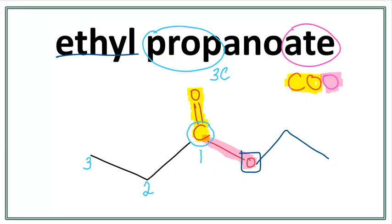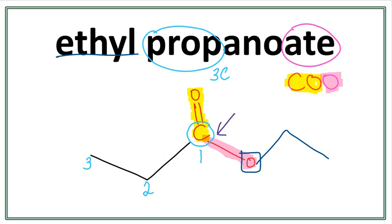Since we are drawing a line structure, we don't really need to draw out this carbon here, so let's get rid of this carbon and the numbers. So this is the structure for ethyl propanoate. The side chain always attaches with the oxygen in the functional group. The parent chain always attaches with the carbon in the functional group.